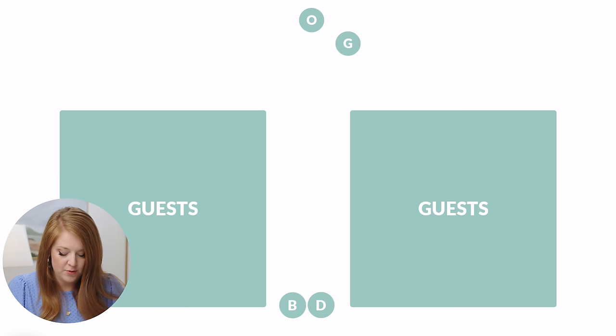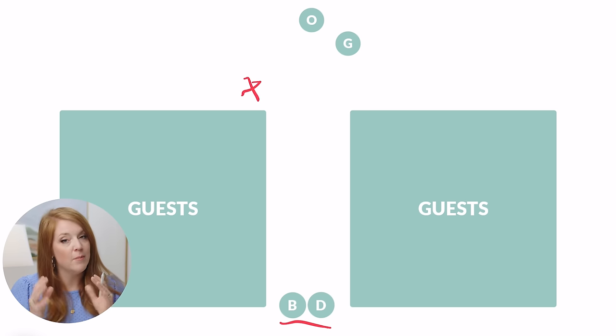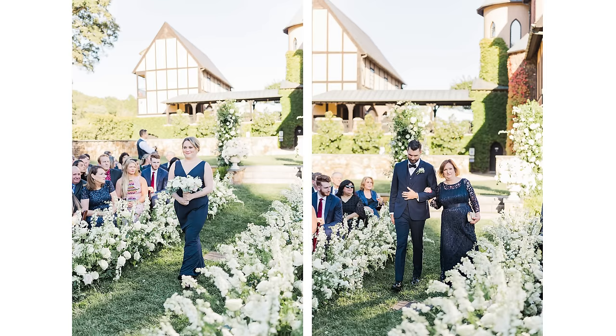In this video I'm going to be doing some diagrams, using the example of a bride, groom, and officiant — but all of this applies no matter who you're photographing. So this is an example of a processional: the bride and her dad are at the back, and I would normally be standing up front, in front of the mother of the bride.